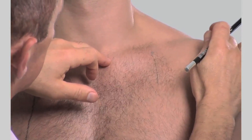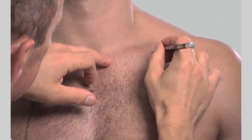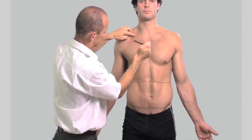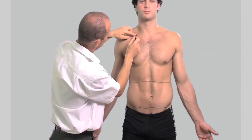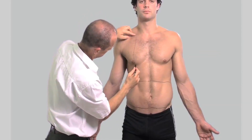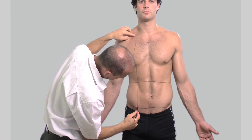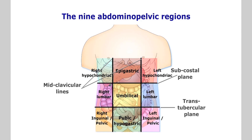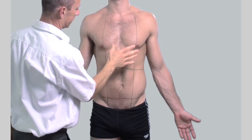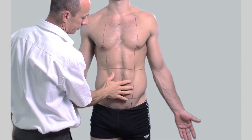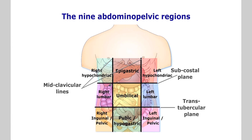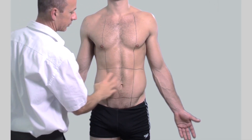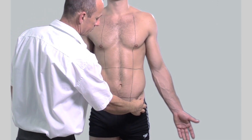The vertical lines or mid-clavicular planes are formed by two parasagittal lines extending downwards from the middle of the clavicles. They go through the semilunar lines of the abdomen and terminate at the midpoint between the anterior superior iliac spines and the symphysis pubis. The central regions are named the epigastric, umbilical and hypogastric or pubic. The lateral regions are the right and left hypochondriac, the right and left lumbar, and the right and left inguinal regions.